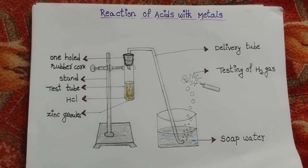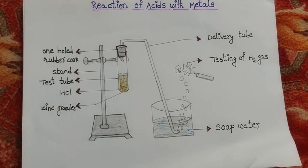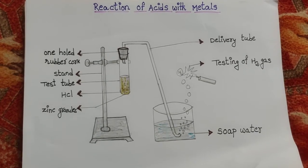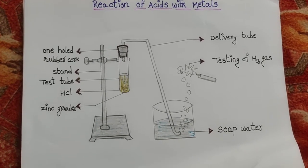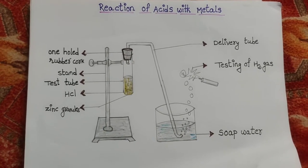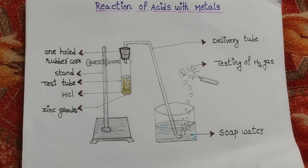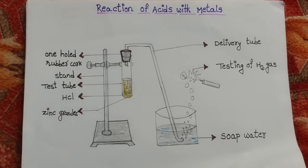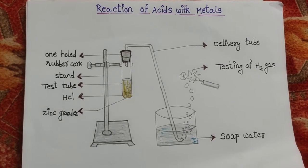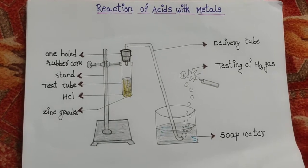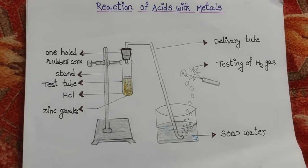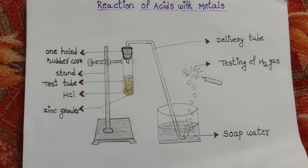Let me discuss about this. The aim of this experiment is to understand how metals react with acids. We will use a metal like iron or zinc, and an acid such as HCl or sulfuric acid — strong or diluted acids.